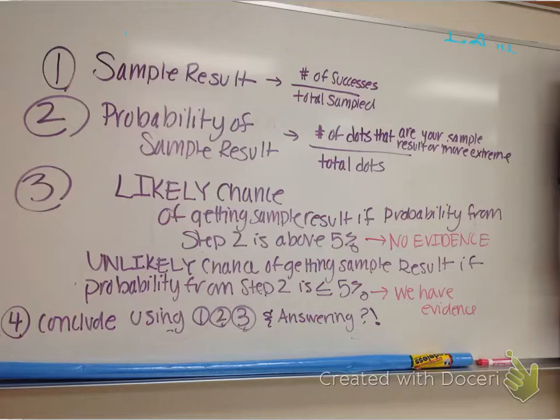I talked about the steps. So I'm going to just read through the steps and then we're going to apply it to the problem. Step one, please write it down in your notes. You need to find your sample results. How do I find that? The number of successes over the total sample.